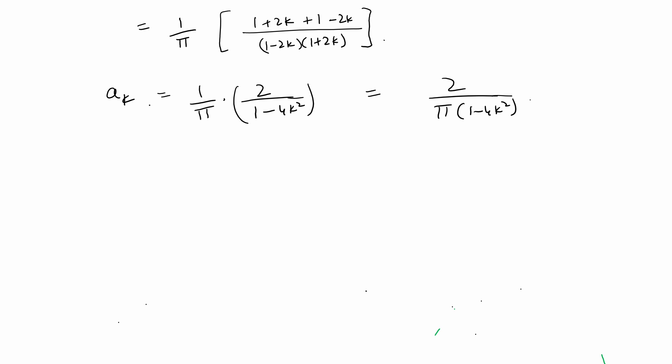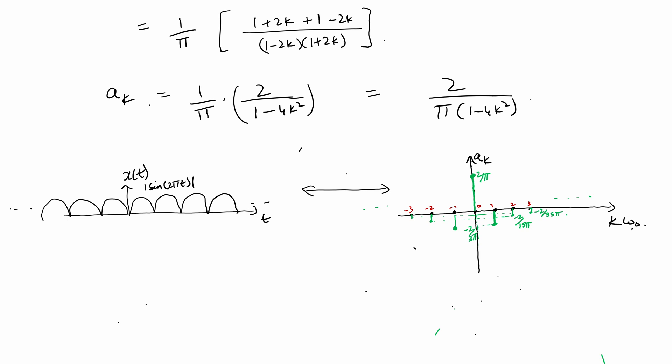Let's interpret these aₖ values. For k = 0: a₀ = 2/π. For k = 1: a₁ = 2/π × 1/(1−4) = −2/(3π). For k = 2: a₂ = −2/(15π). For k = 3: a₃ = −2/(35π). So aₖ is positive for k = 0 and negative for all other k values.